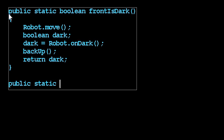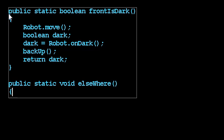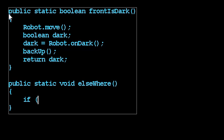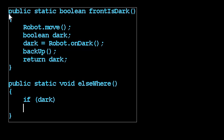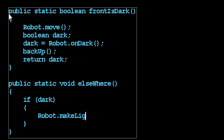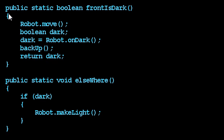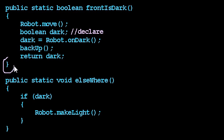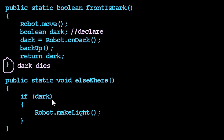Let's look at another method. I have a method I'm calling elsewhere. And in elsewhere, I write: if dark, then make light. What does that code do? Well, it doesn't make sense — it shouldn't compile, right? Because dark was declared in another method. Dark is born at that moment of declaration, and at the closing brace, the variable dies. Dark is forgotten.